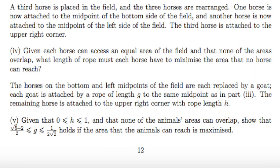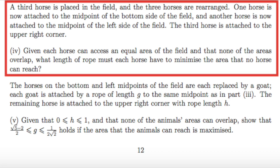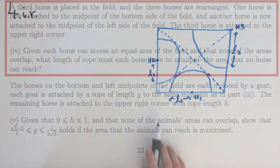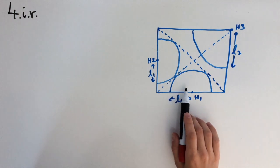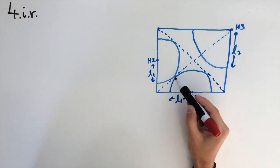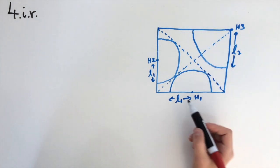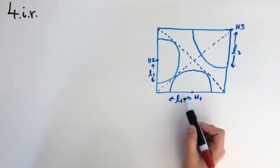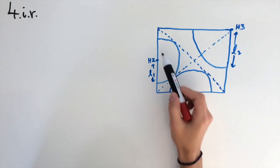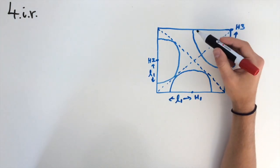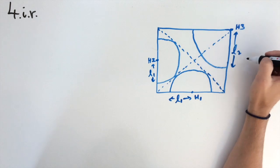Now a third horse is placed in the field and the courses are rearranged. One horse is attached to the midpoint of the bottom side, another to the midpoint of the left side, and the third horse is attached to the upper right corner. For part IV, given that each horse accesses an equal area and none of the areas overlap, we need to find the rope lengths that minimise the area no horse can reach. The two midpoint horses have radius L1 (semicircles) and the corner horse has radius L2 (quarter circle).